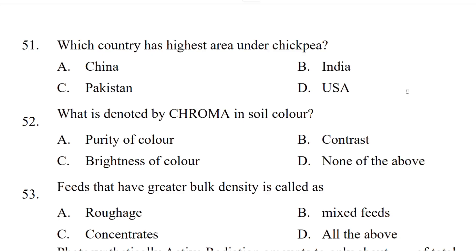The first question is: which country has the highest area under shikpi? The options are China, India, Pakistan, USA. The correct answer is India. What is denoted by chroma in soil color? Purity of color, contrast, brightness of color, or none of the above? The correct answer is purity of color.